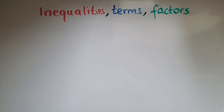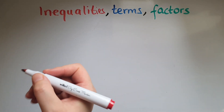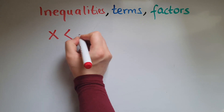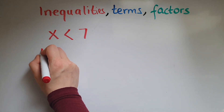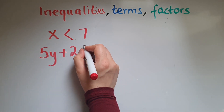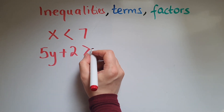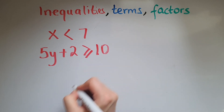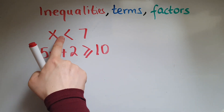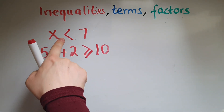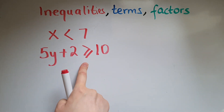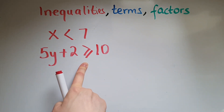In terms of inequalities, we could have x is less than 7, or 5y plus 2 is greater than or equal to 10. With an inequality, you have the less than sign, less than or equal to, greater than sign, or greater than or equal to.